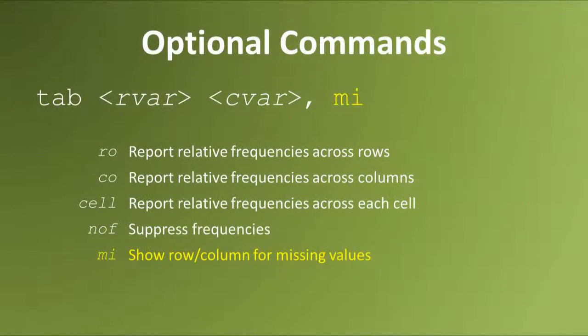Using the mi command, which is short for missing, asks Stata to show rows or columns for missing values.